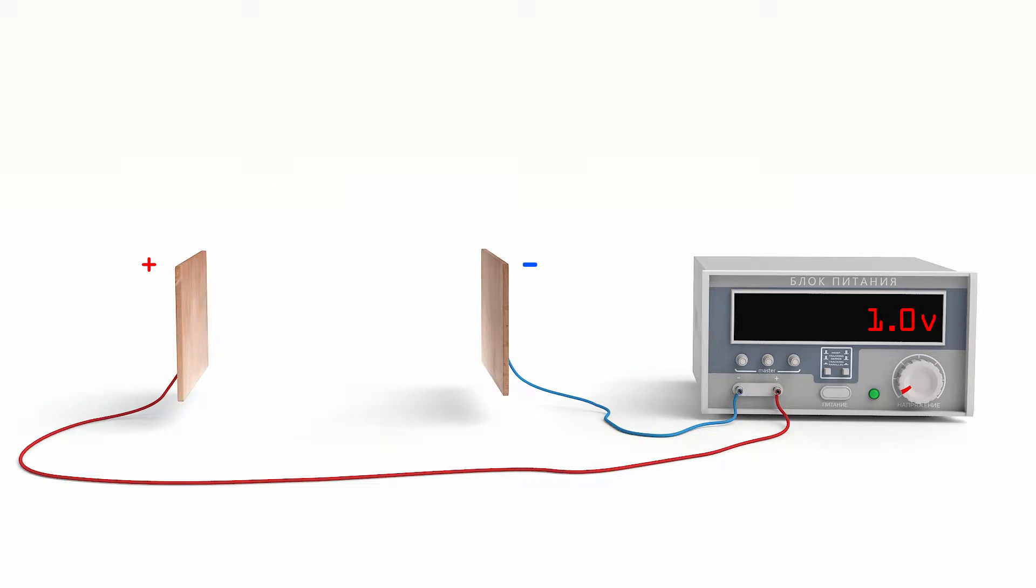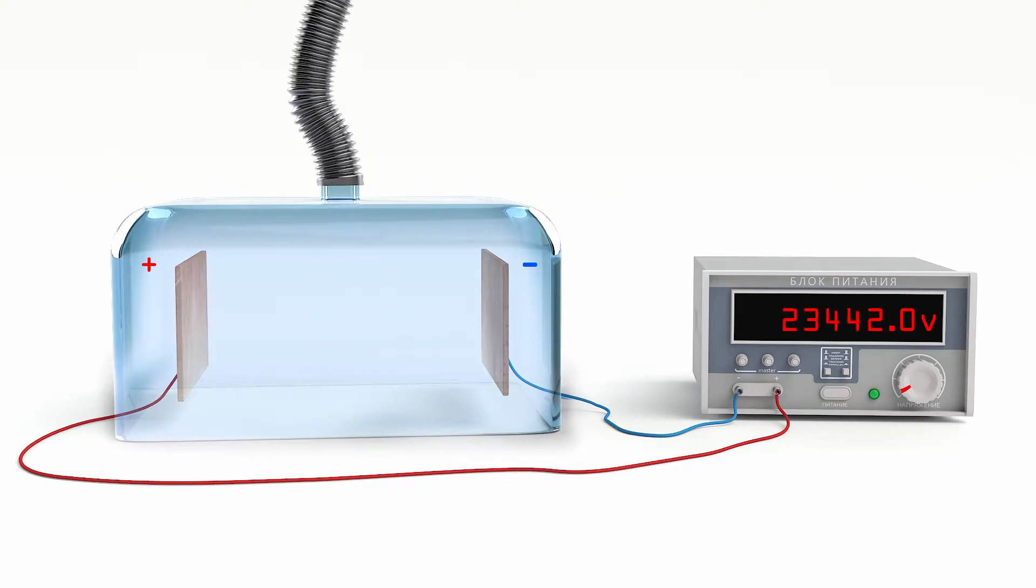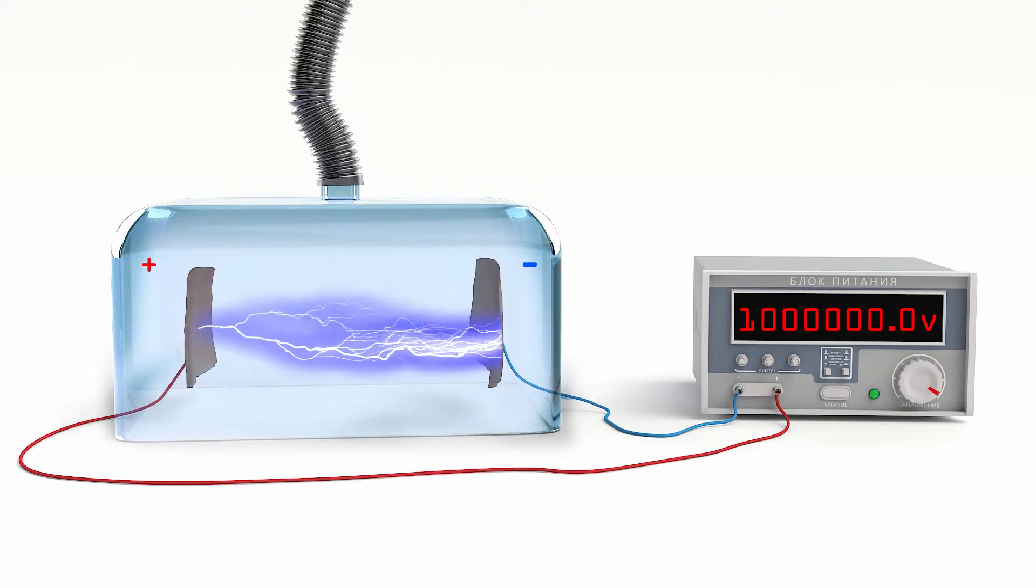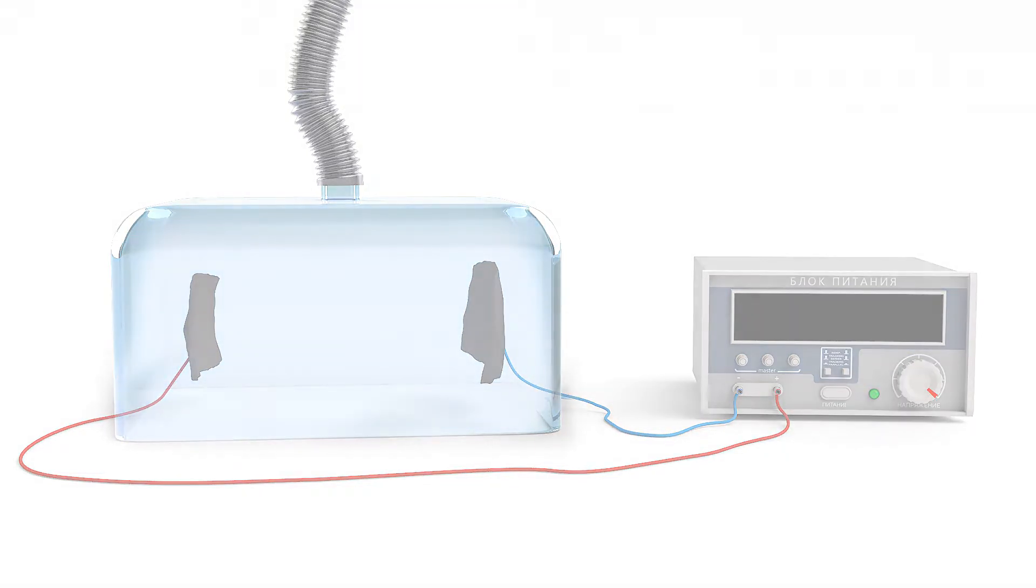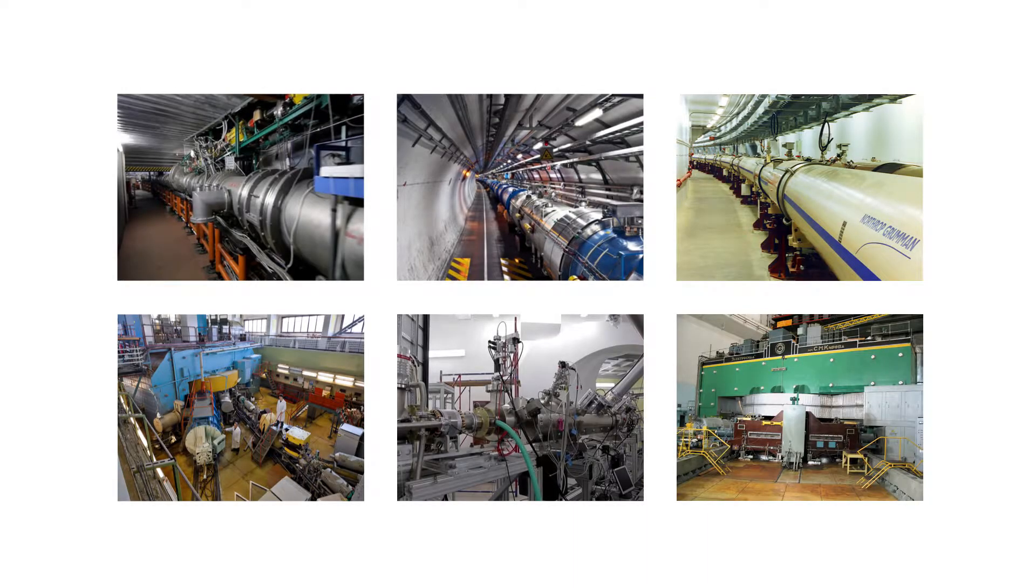If you put electrodes in a closed volume from which the air has been pumped out, between these electrodes, one can create a voltage of hundreds, thousands, or even tens of thousands of volts. But to create a voltage of one million volts, and what's more, one billion volts, will not be possible. To do this, we need more complex devices called accelerators.